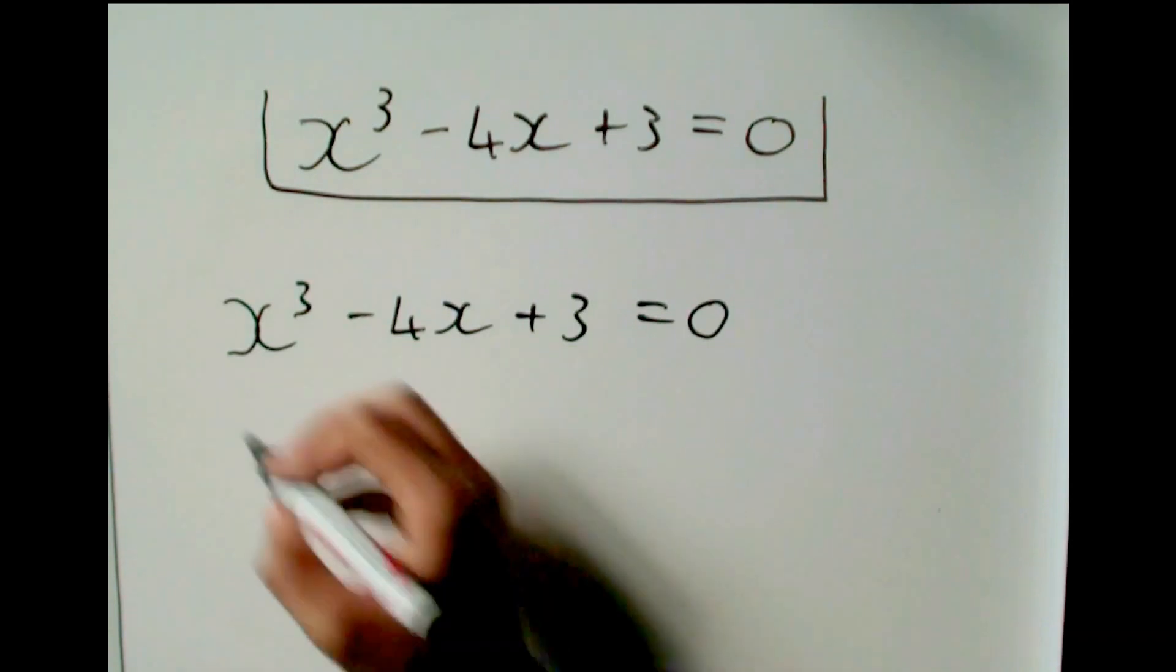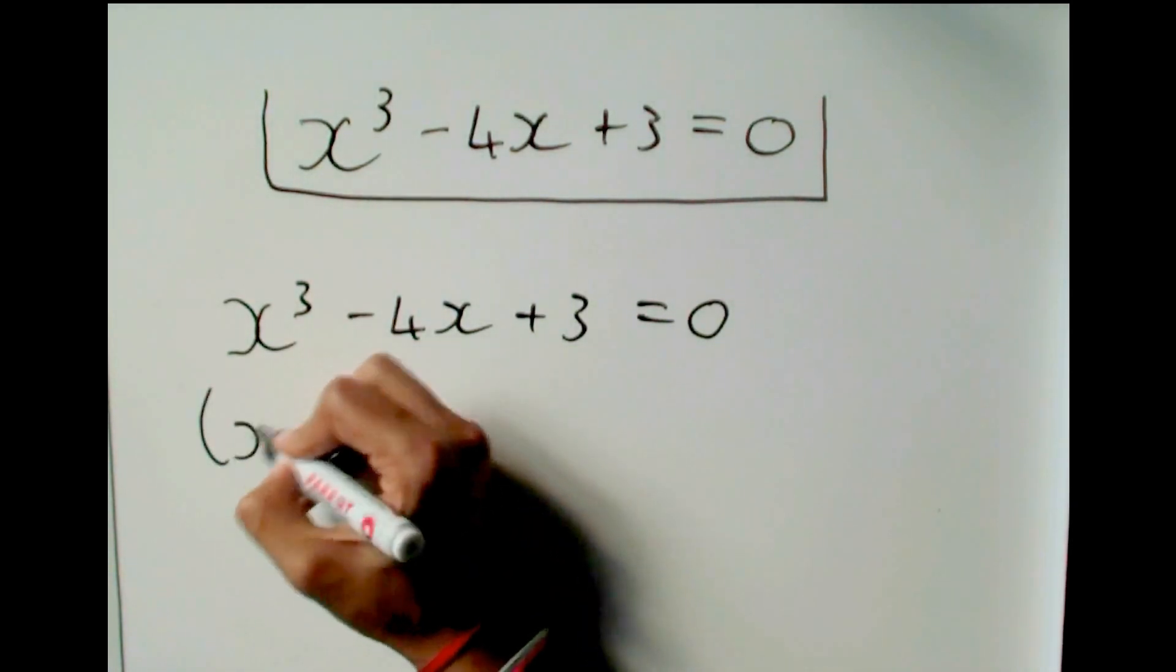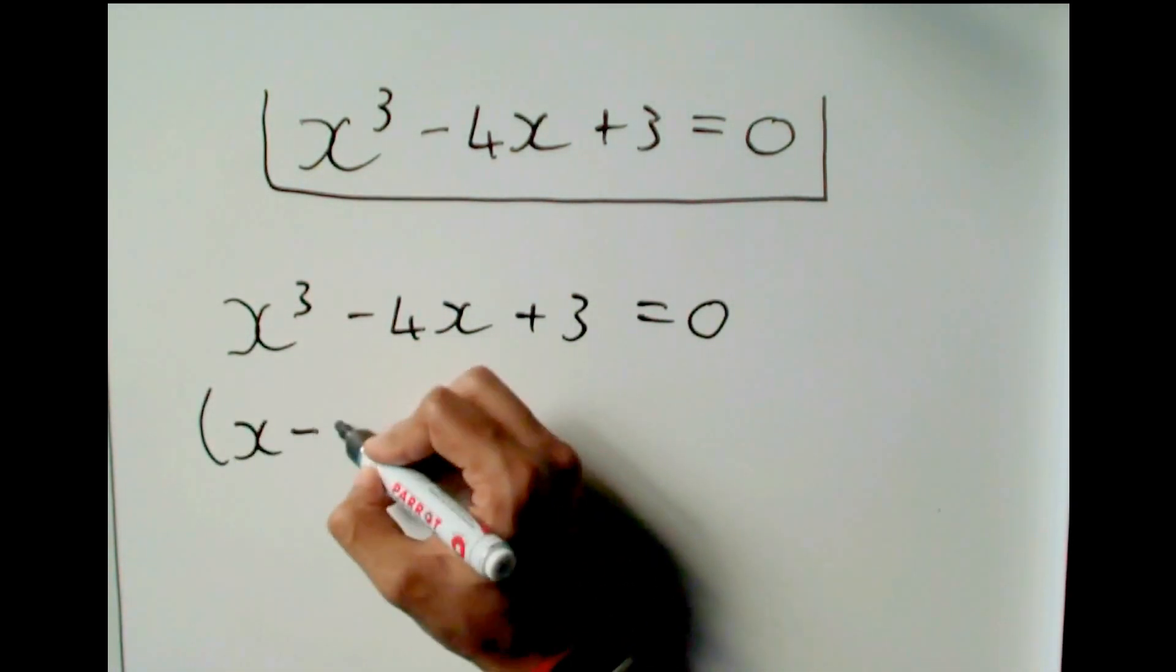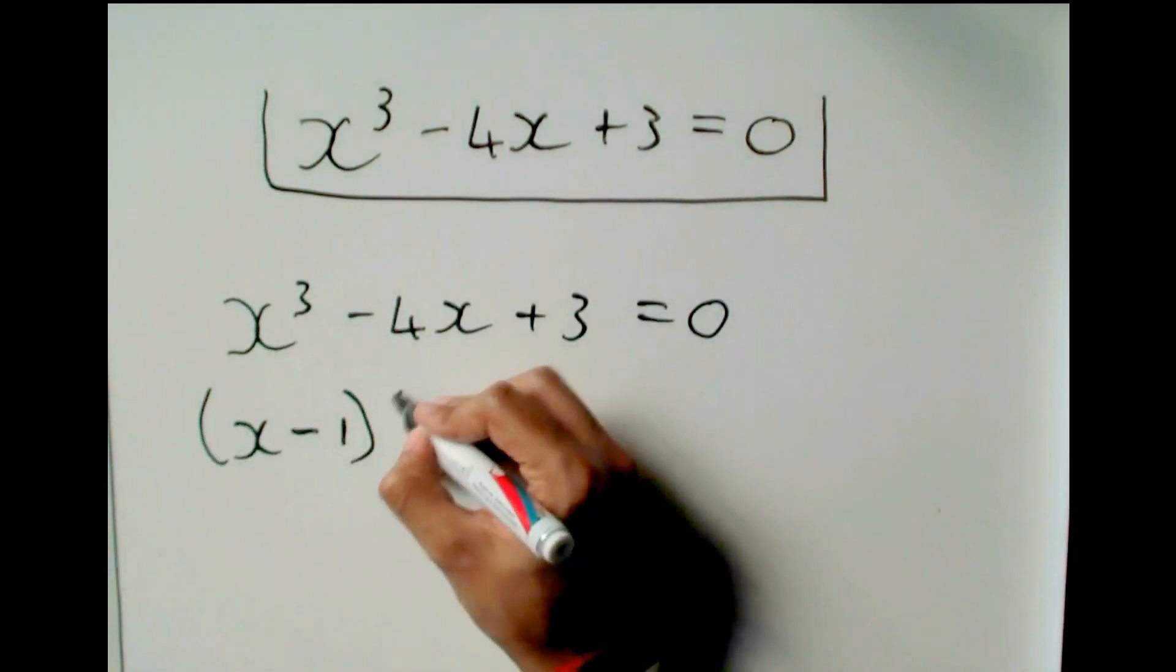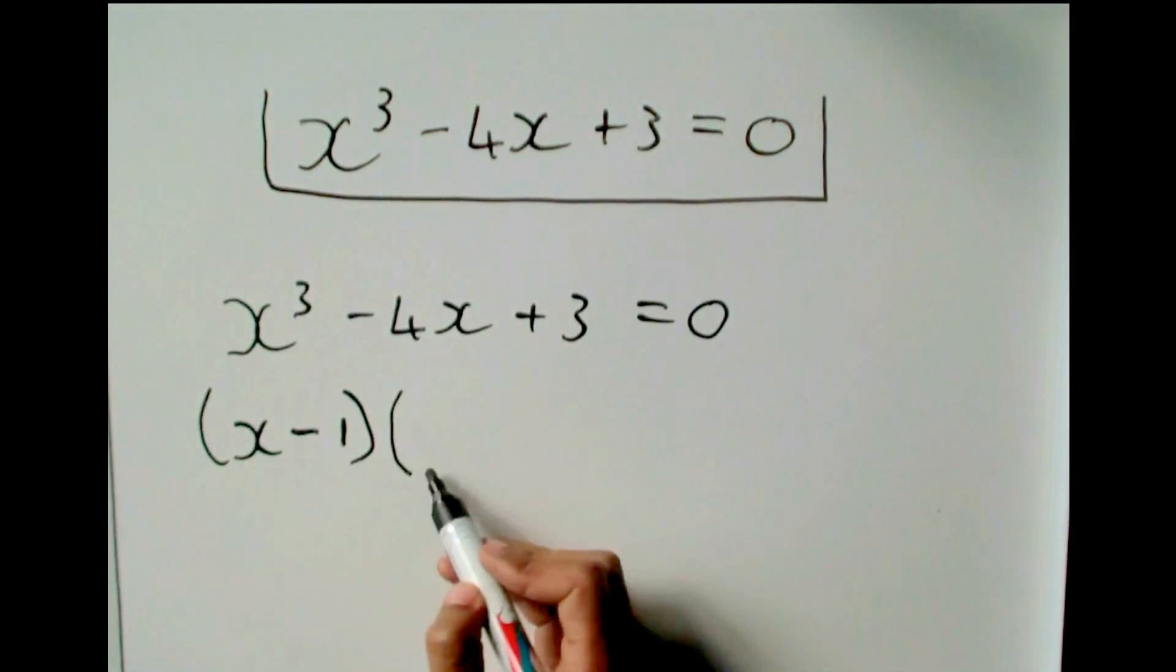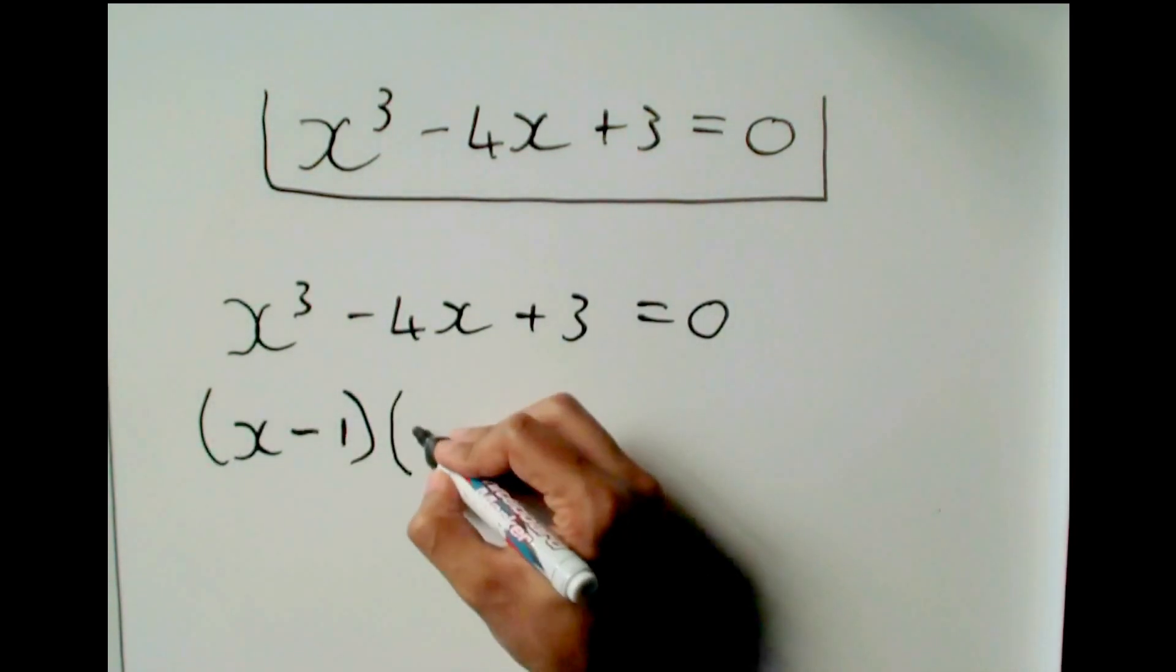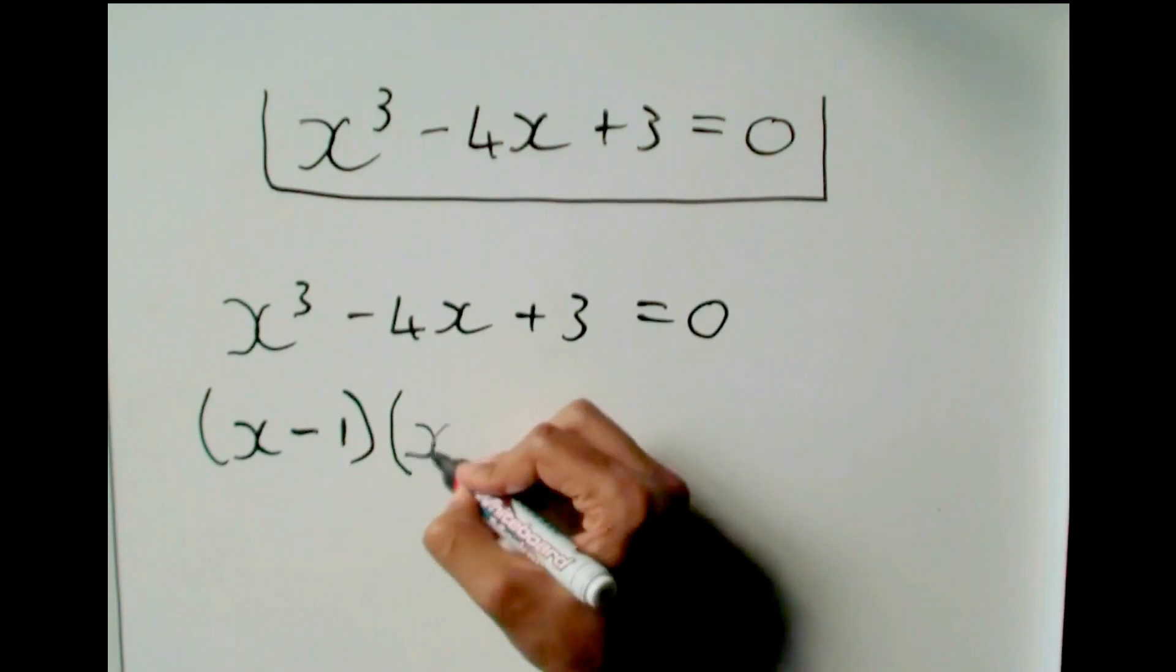So I already guessed my factor earlier. If you remember, I guessed x minus 1, right? Now my next bracket, I do not know what my next bracket is. But I know that the first number in my next bracket times the first number in this bracket must give me that first term, x cubed. So x times what will give me x cubed? It is x squared.